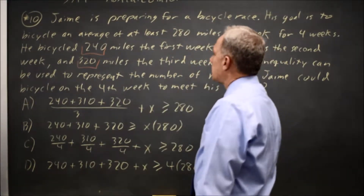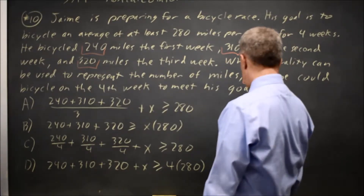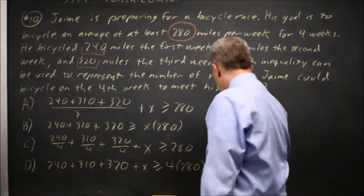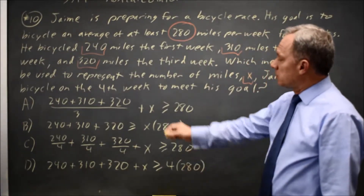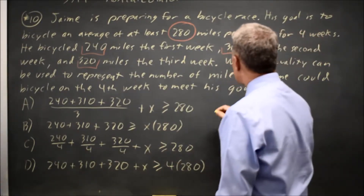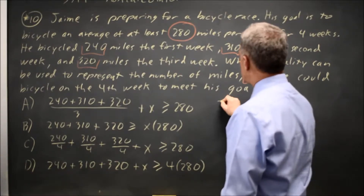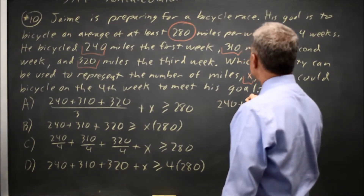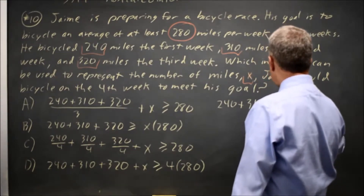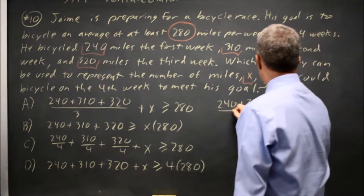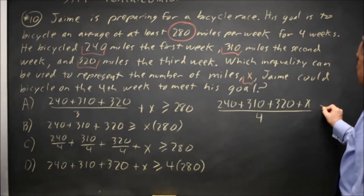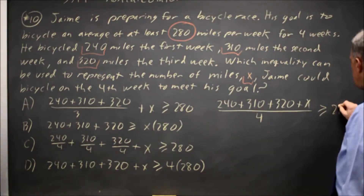He wants to average at least 280. None of these answer choices matches what I would want to write. What I would want to write is (240 plus 310 plus 320 plus X) over 4, because that's the average. I would want that expression to be greater than or equal to 280.